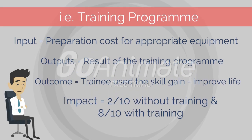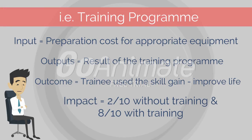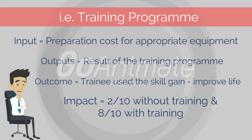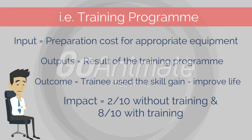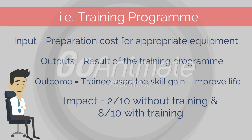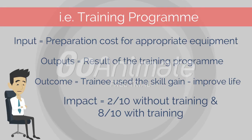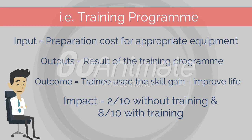For example, consider a training program. Inputs are the costs required to prepare the appropriate equipment. Outputs are the result of the training program, such as 10 people learning new skills. Outcome is where the trainees use the skills gained to improve their lives, such as gaining more income. The impact is where, out of the 10 participants, maybe 2 could get a job without the training, but the remaining 8 can only get a job because of the training. So the impact measurement is based on them.